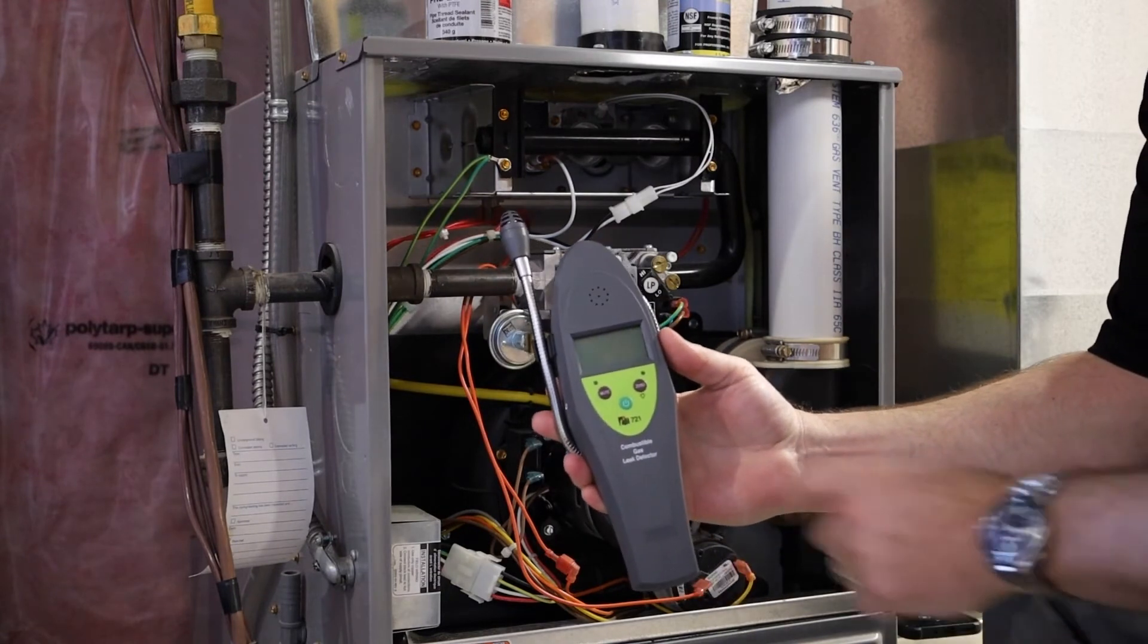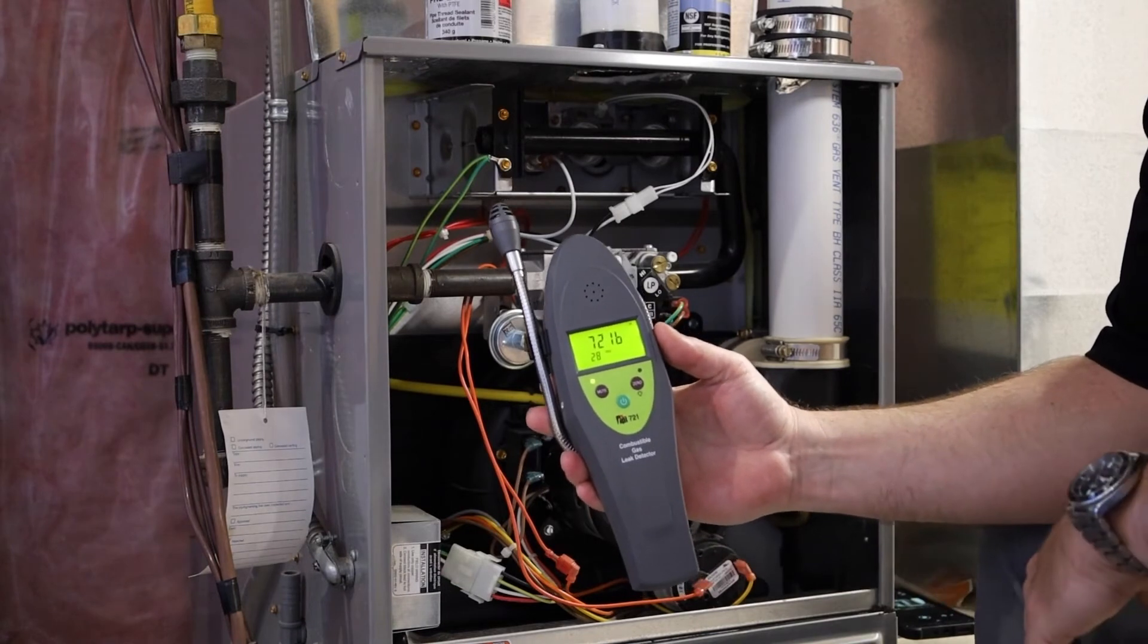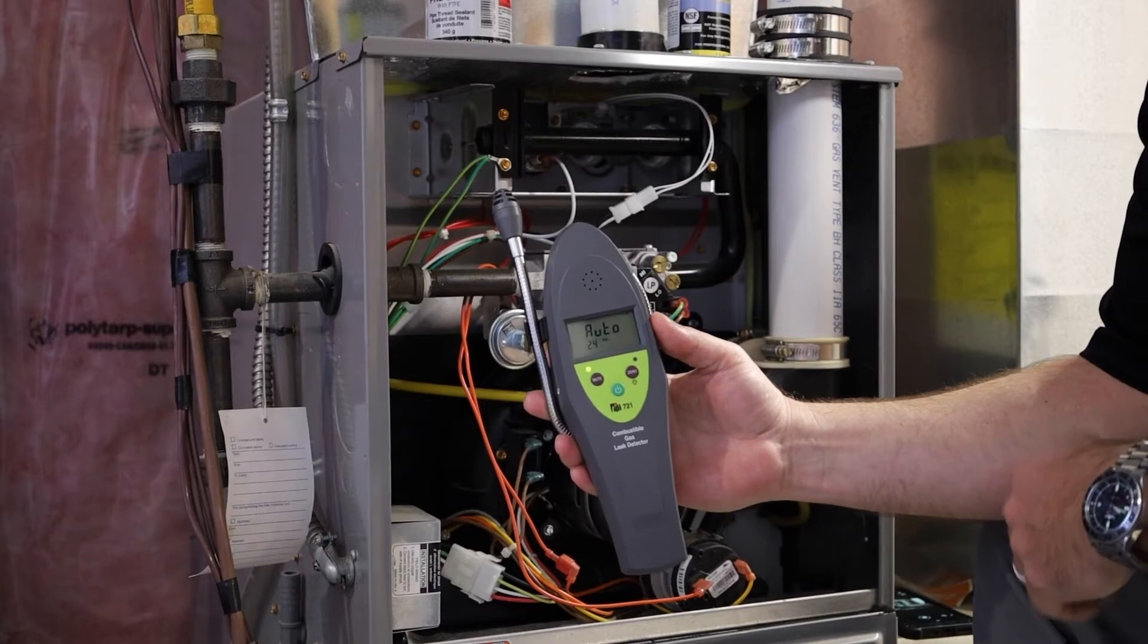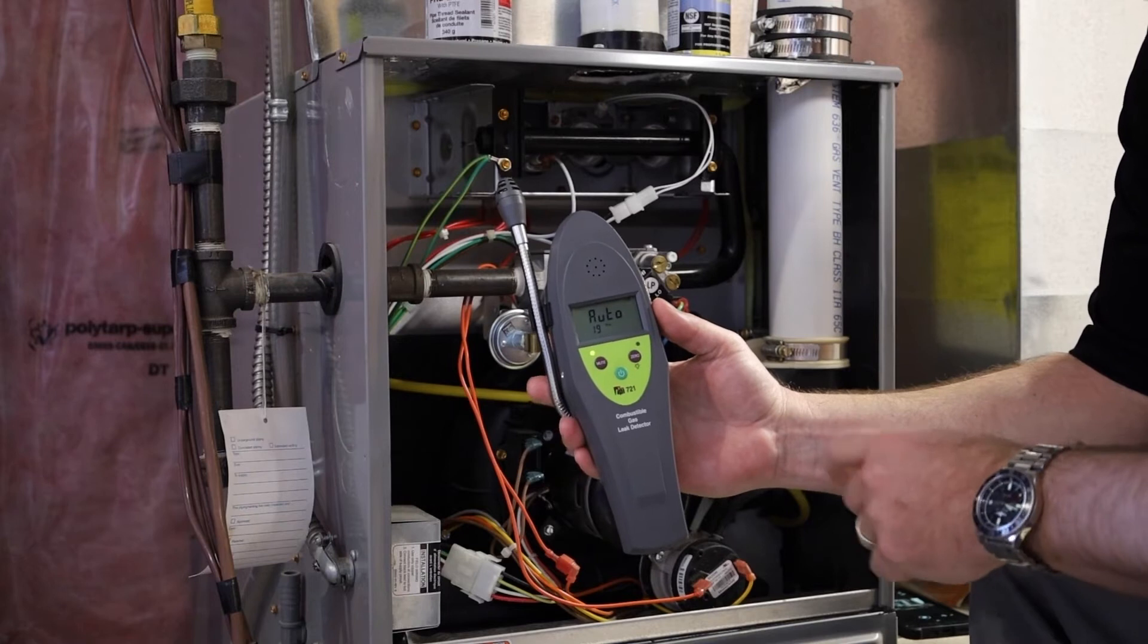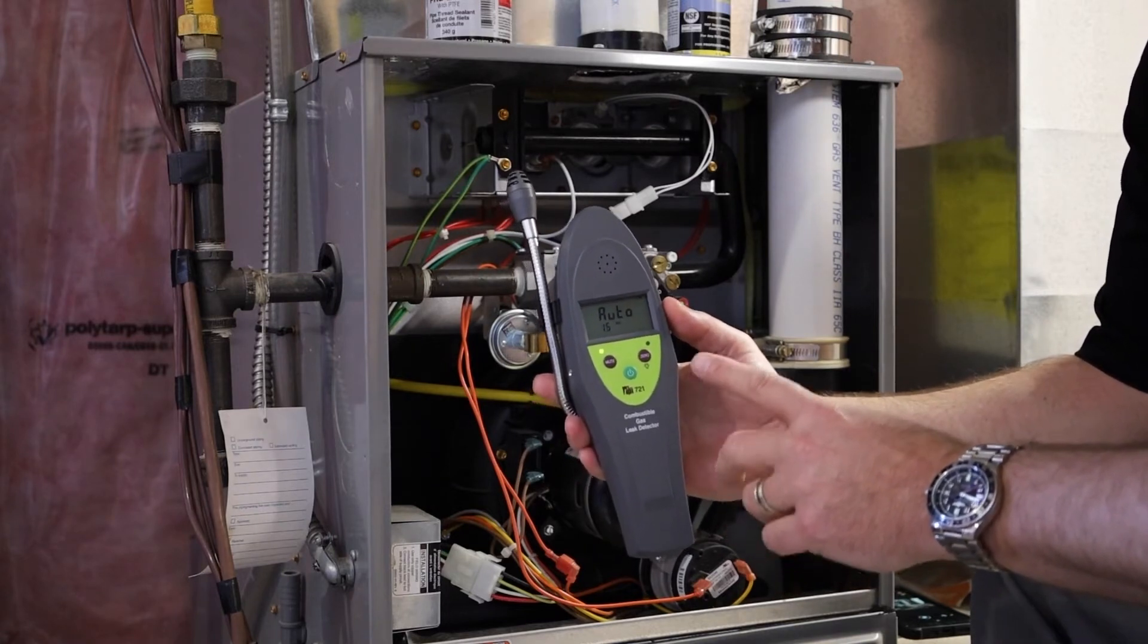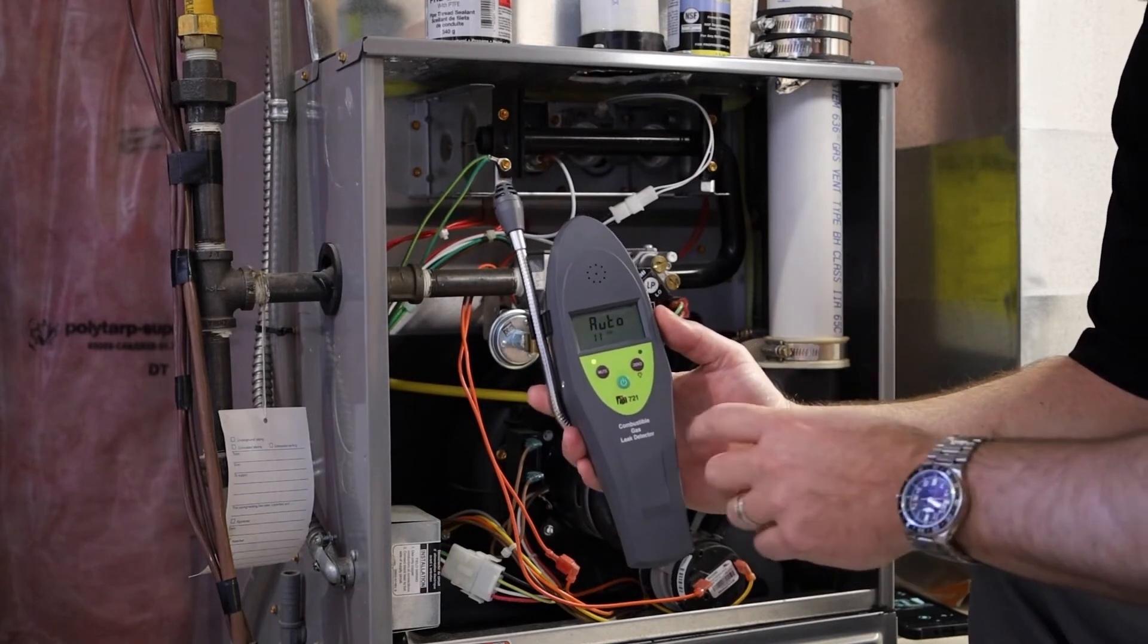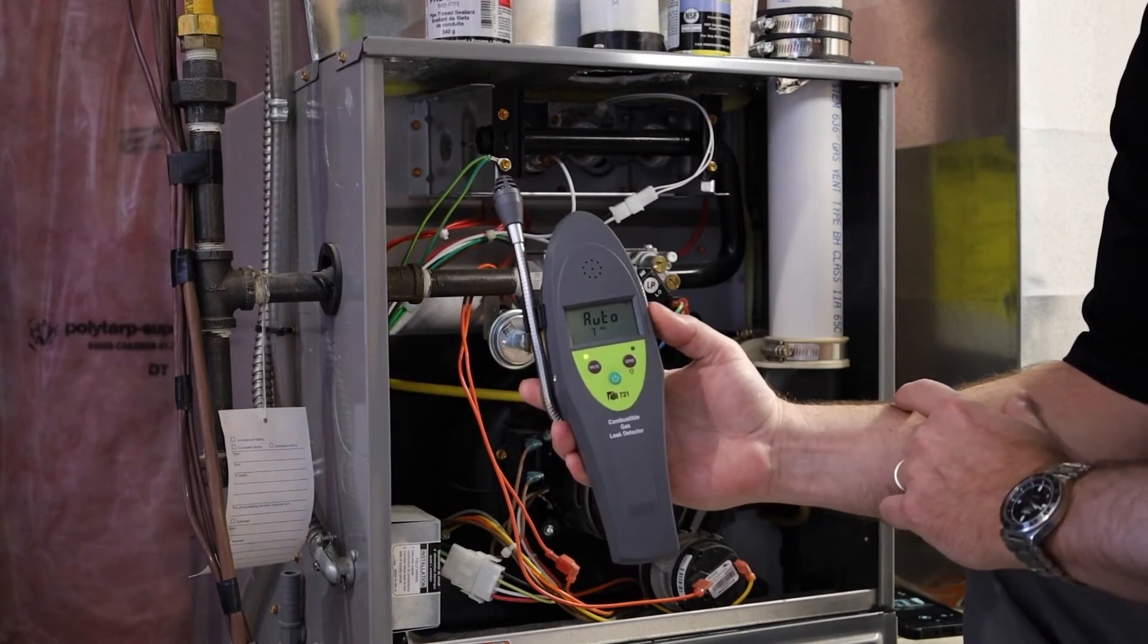Here is the 721. Again, does all the combustible gases. But now we've gone into an LCD display. This one will actually display how big the leak is. It will also do LEL, lower explosive limit. So it will display in percent LEL. So again, I'm waiting for my 30 second countdown to be done. Again, could take longer if the ambient temperature is really cold.